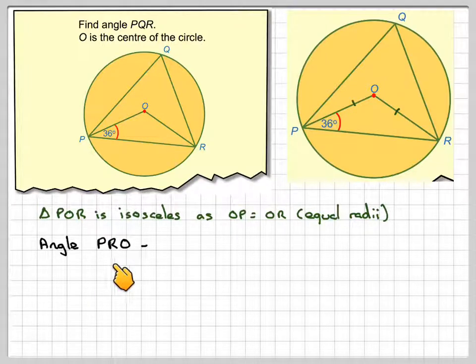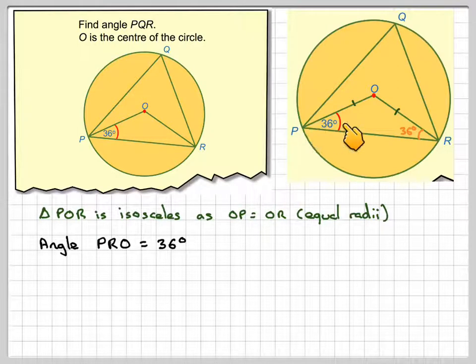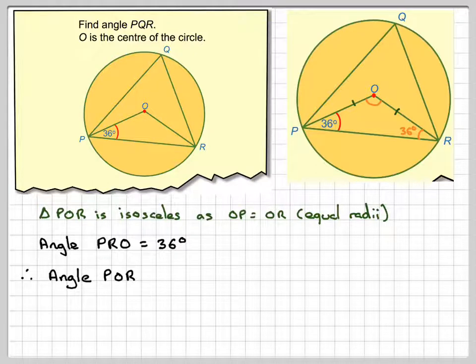So angle PRO, this angle here, is also equal to 36° because that's the base angle of the isosceles triangle.